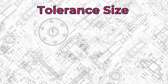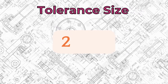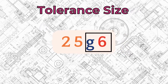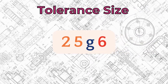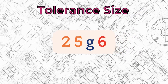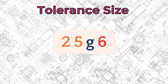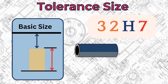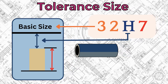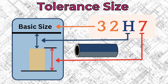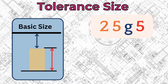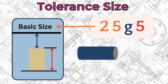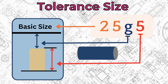All of the above together leads us to what we see on the drawings, which is the tolerance size. It combines the basic size with the tolerance class and is designated by the basic size followed by the tolerance class without spaces. For example, 32H7 specifies a hole with a nominal size of 32 mm, deviation H, and tolerance grade IT7. 25G5 specifies a shaft with a nominal size of 25 mm, deviation G, and tolerance grade IT5.